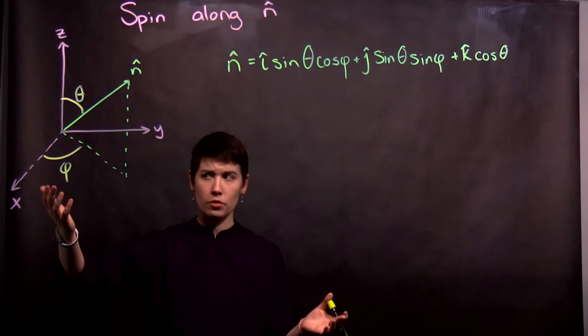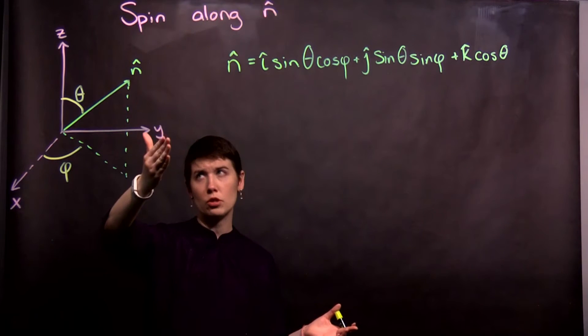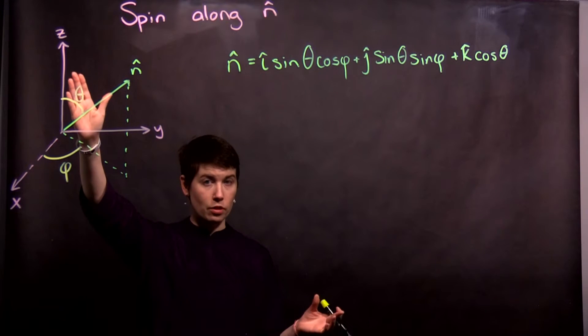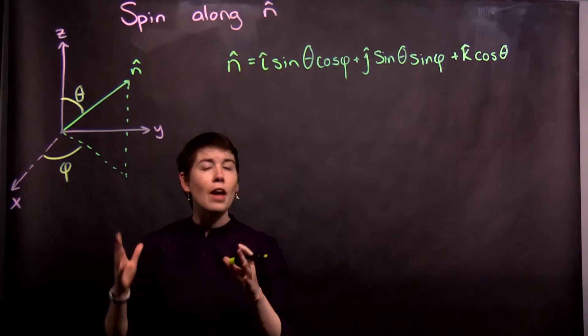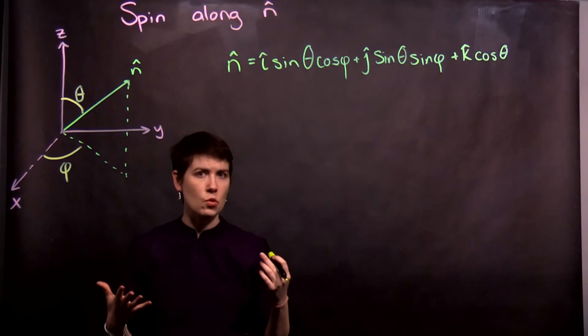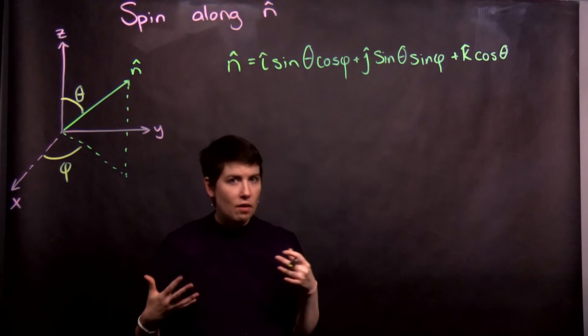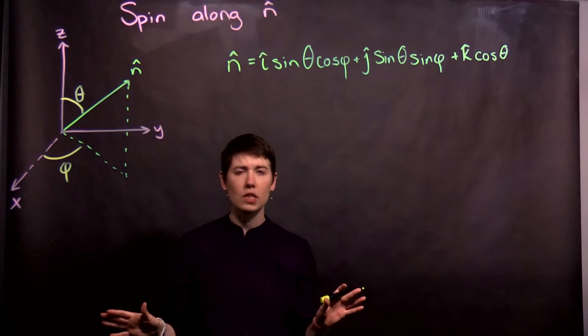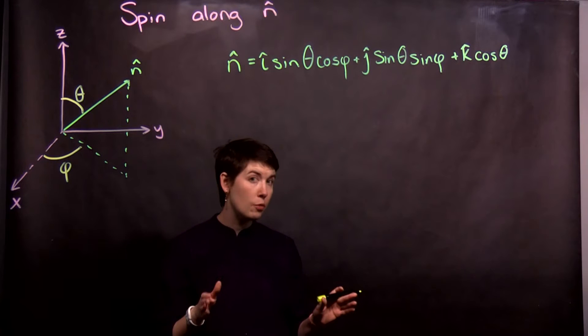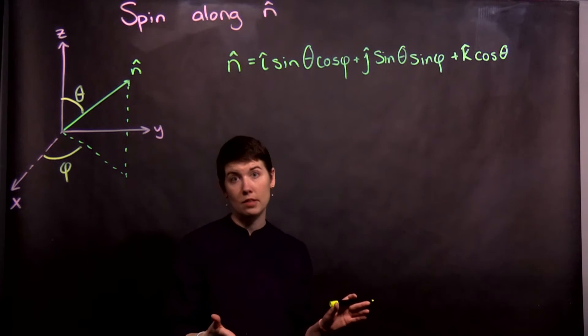We just pick some direction and call that x, we pick some direction and call that y, we pick some direction and call that z. So you can imagine taking this and turning the whole thing and that shouldn't change our physics, right? In the real world, gravity tells us something about up and down. Gravity hasn't factored into any of this. So it has been completely arbitrary what direction we call x, y, and z.